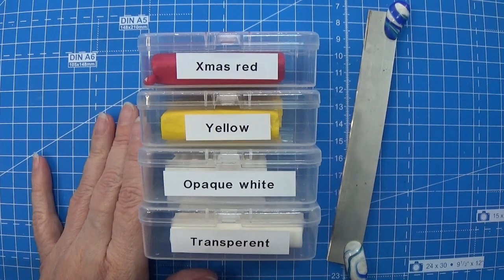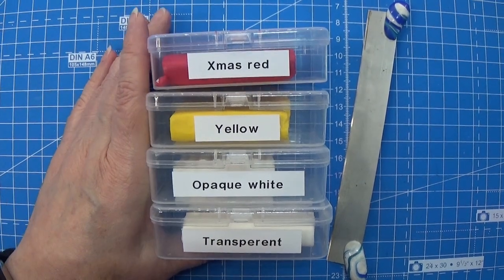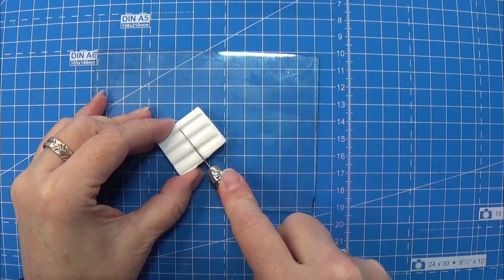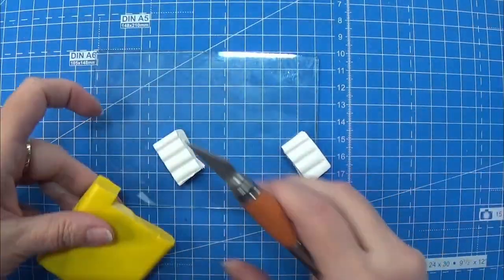Hello and welcome. Let's make a tomato cane today. I'm using Christmas Red, Yellow, Opaque White, and Translucent.